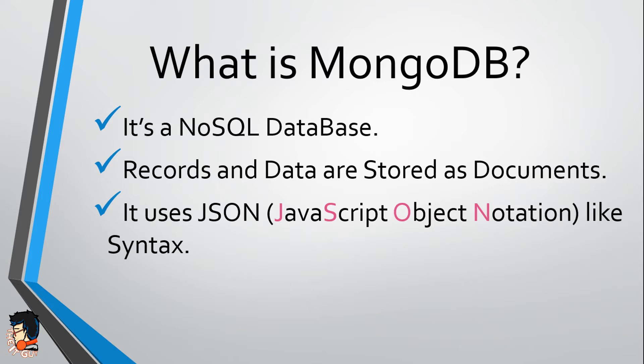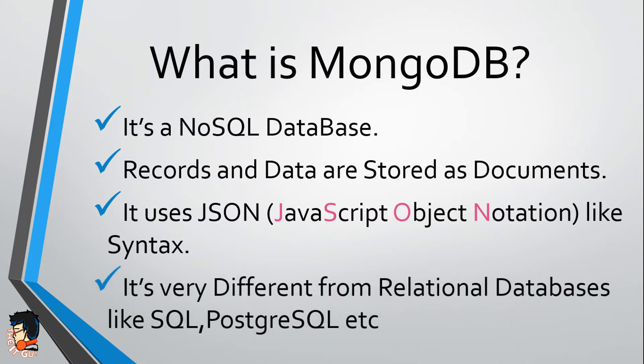JSON is basically JavaScript Object Notation. We are going to see the exact syntax further in this video as well as in this entire series, so don't worry if you don't understand what JSON-like syntax looks like. Moving ahead, MongoDB is very different from relational databases like SQL, PostgreSQL, SQLite, etc.